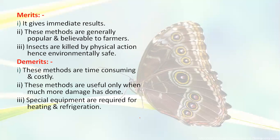The disadvantages or demerits of physical control are: these methods are time consuming and costly; they are useful only when much damage has already been done; and special equipment is required for heating, cold refrigeration, and moisture manipulation. Overall, these are the practices, advantages, and disadvantages of physical control.